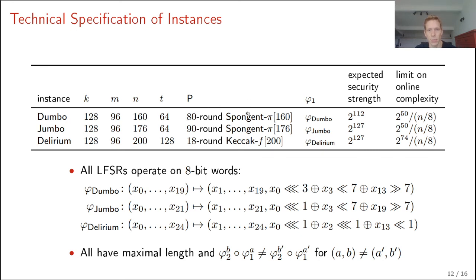Here we see the details on the primitive that's used. But most important in this slide is that we use three different LFSRs for the three functions, Phi-Dumbo, Phi-Jumbo, and Phi-Delirium. These three functions all operate on 8-bit words and have been chosen to kind of fit to the permutation that's actually used. And in addition, all of them turn out to have a maximal length and satisfy this property. So all of these three functions satisfy the criterion that we need for the proof to hold.